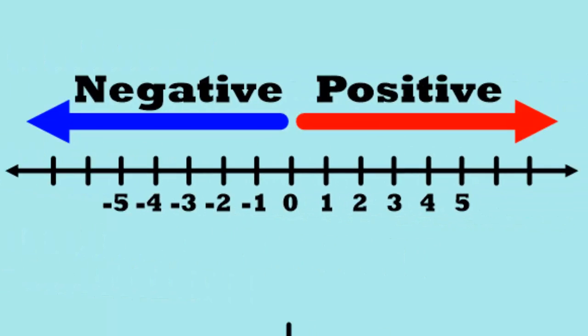Remember integers? Those are positive or negative numbers, including zero. We can find them on our number line. Remember, positive numbers go up to the right, negative numbers go down to the left.